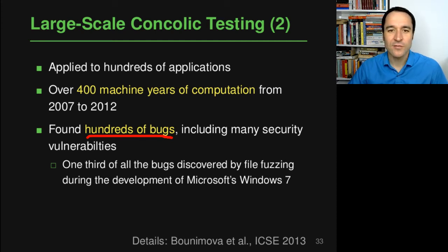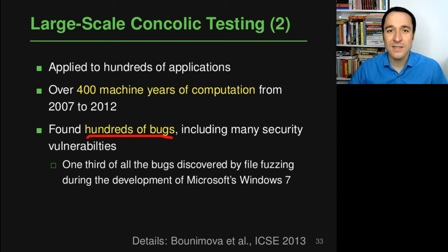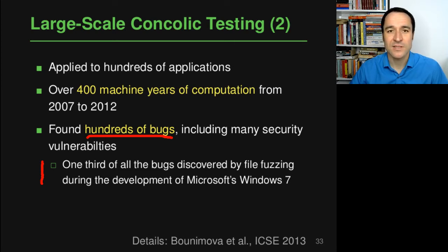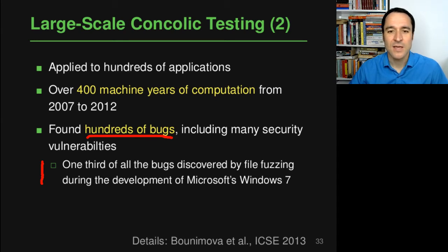To give a sense of how this compares to other techniques used to find this kind of bug: one third of all bugs discovered by any kind of file fuzzing during the development of Microsoft Windows 7 were found using this SAGE tool. So it has had a significant impact.